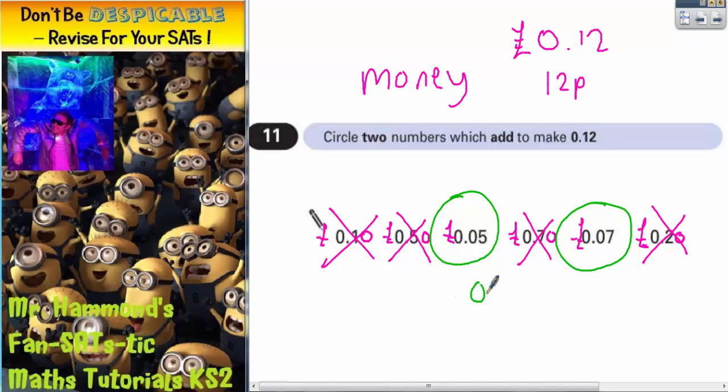Just to double check: 0.05 add 0.07. 5 and 7 makes 12, so 0.05, put your 2 in, carry your 1. 0 and 0 plus 1 makes 1. 0 and 0 makes 0. Put your decimal point in. So 0.05 add 0.07 does indeed make 0.12.